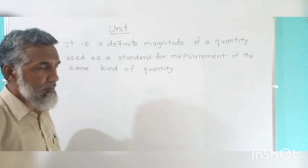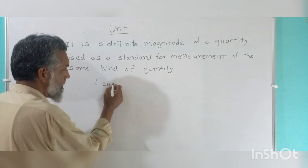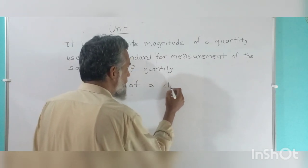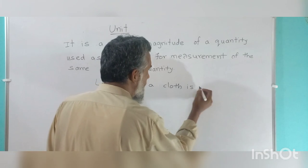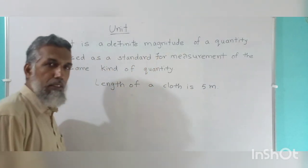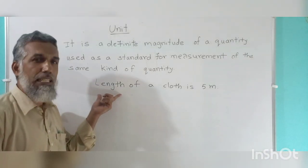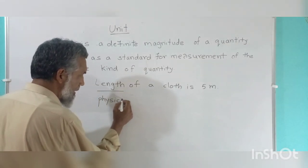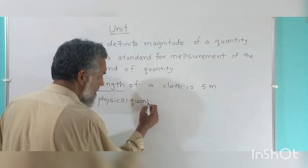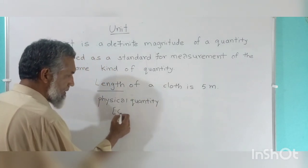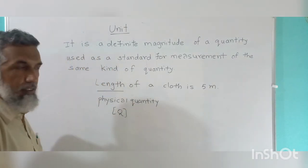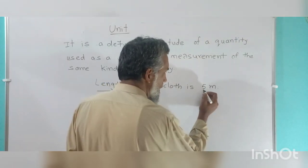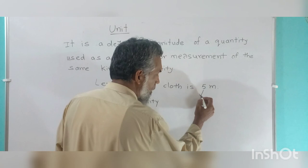For example, take length. The length of a cloth is five meters. Here, length is a physical quantity — we can represent this physical quantity by capital Q. The cloth is the object, and five meters is its measurement. Five is called its magnitude.